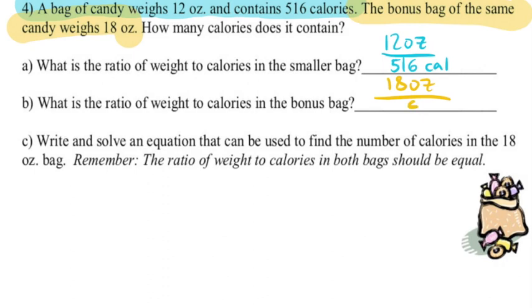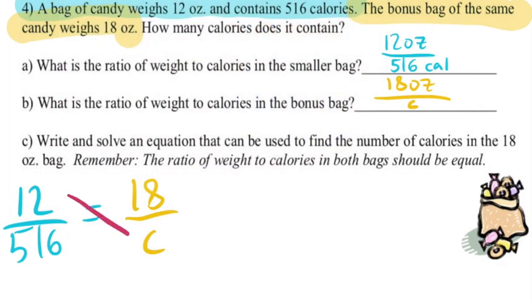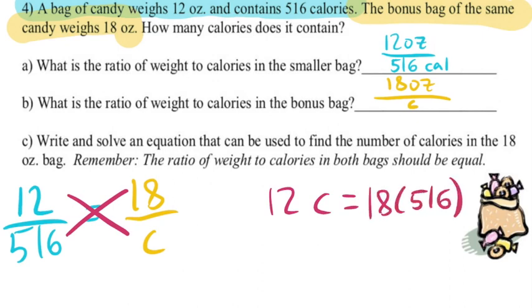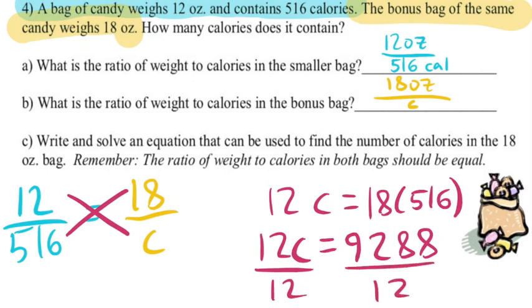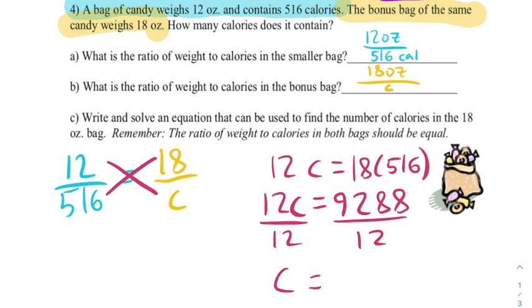So now to solve this problem, what you're going to do is you're going to set the two ratios equal to each other. So you're going to say 12 divided by 516 equals 18 over C. And to solve that, we are going to cross multiply. 12 C equals 18 times 516. My calculator tells me that this is 12 C equals 9,288. And I can solve this by dividing by 12 to get C equals 774.